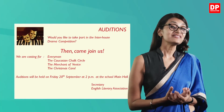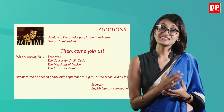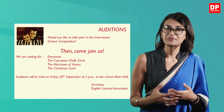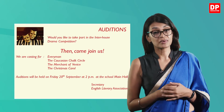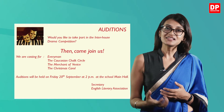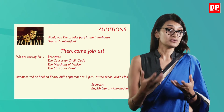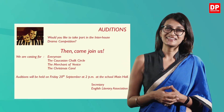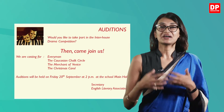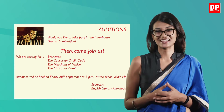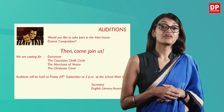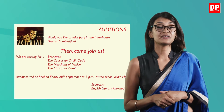Now let's look at your pupil's book, Unit 6, Activity 7 on page 65. The activity is based on Activity 6 on page 64. Let's quickly read it through together. The notice states there are auditions for the drama competition. It starts with the title 'Auditions' and reads: 'Would you like to take part in the interhouse drama competition? Come join us. We are casting for Everyman, The Caucasian Chalk Circle, The Merchant of Venice, and A Christmas Carol. Auditions will be held on Friday 20th September at 2pm at the school main hall. Secretary, English Literary Association.'